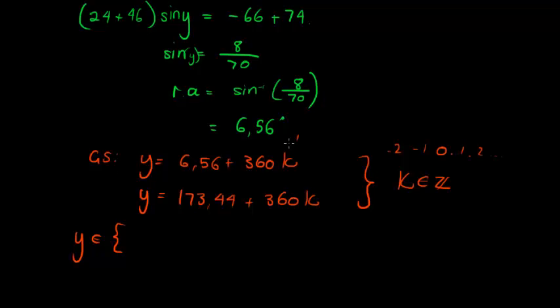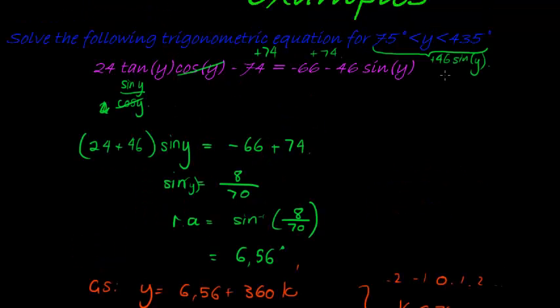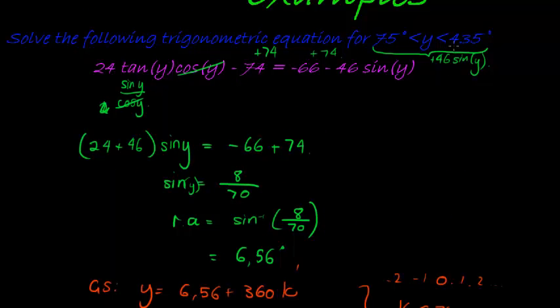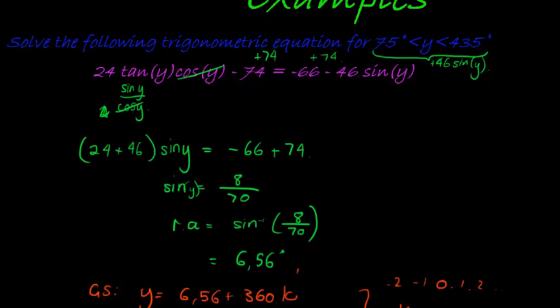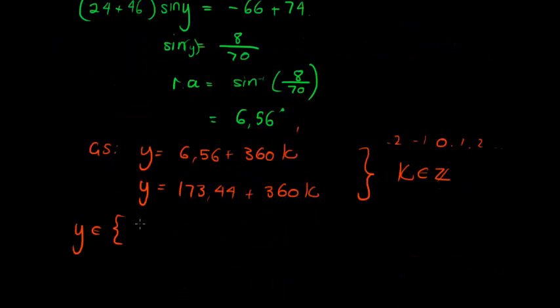360 plus 6.56 gives me 366.56. 366, that is allowed, since the maximum we can have is 435. So 366.56 is allowed.